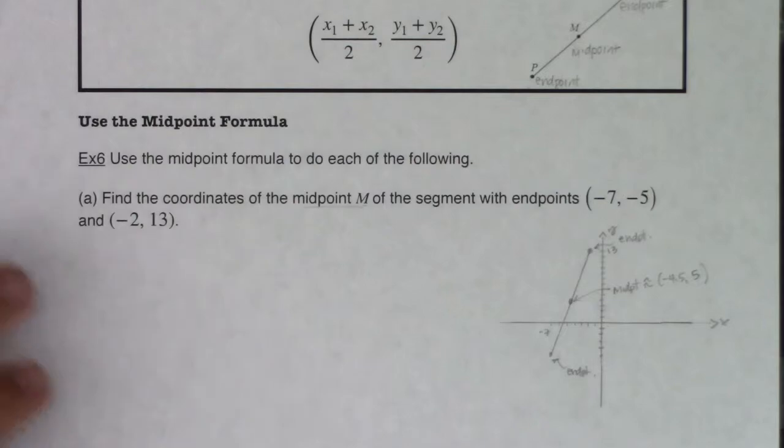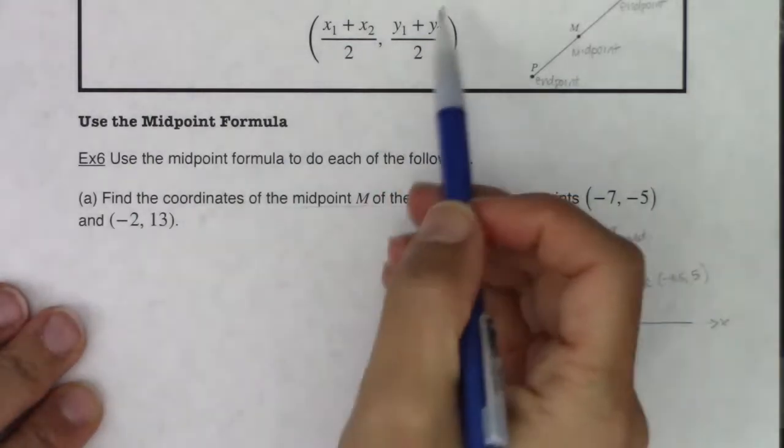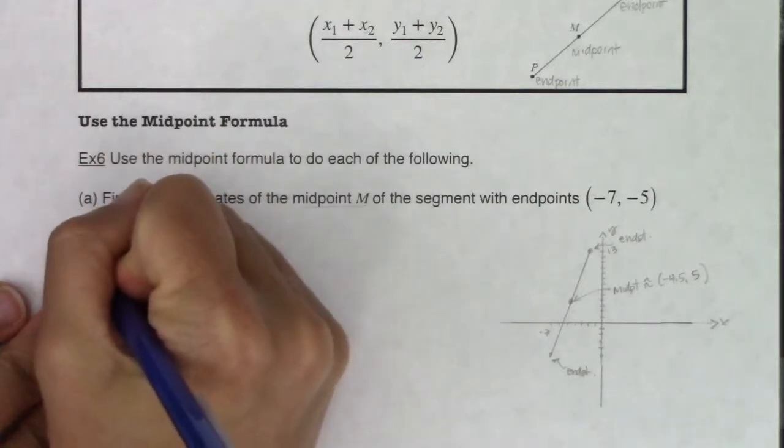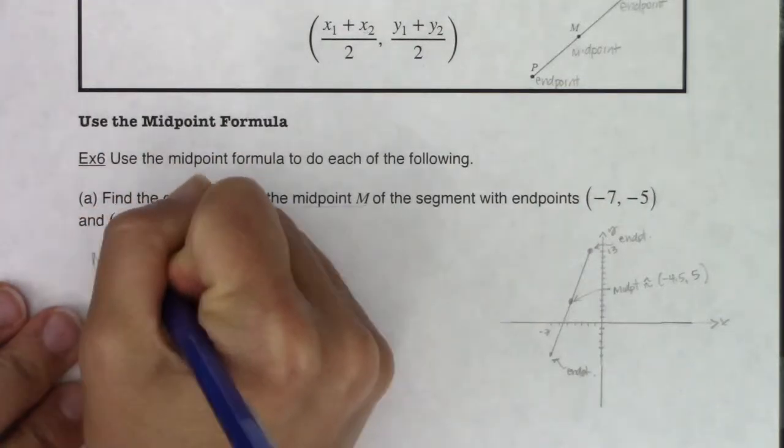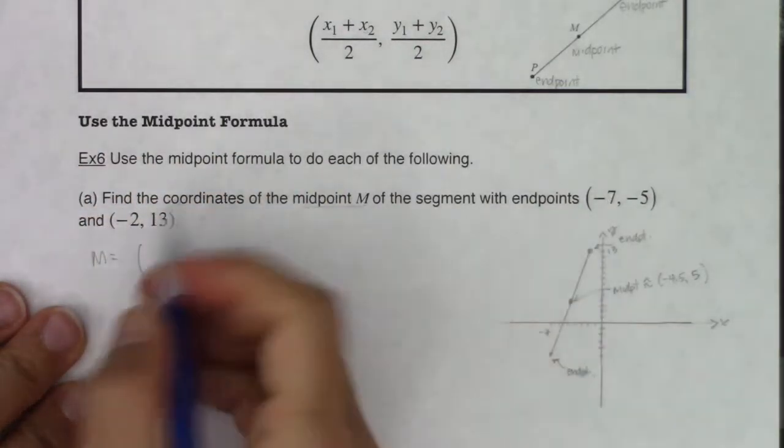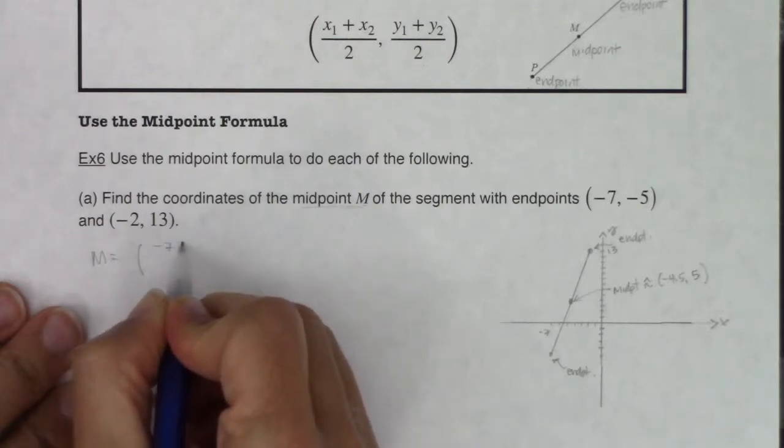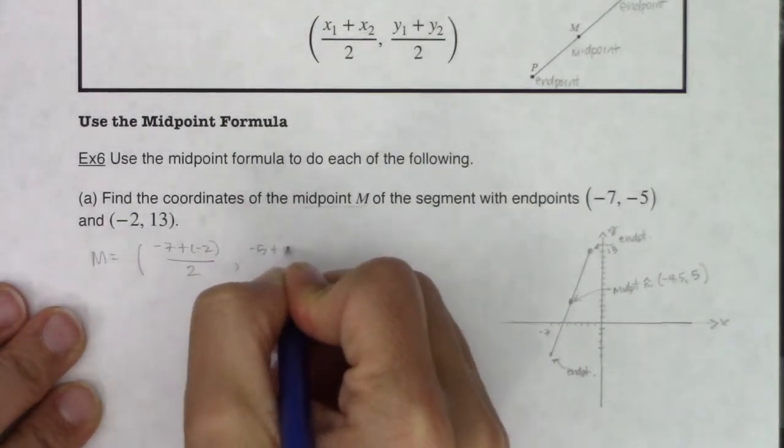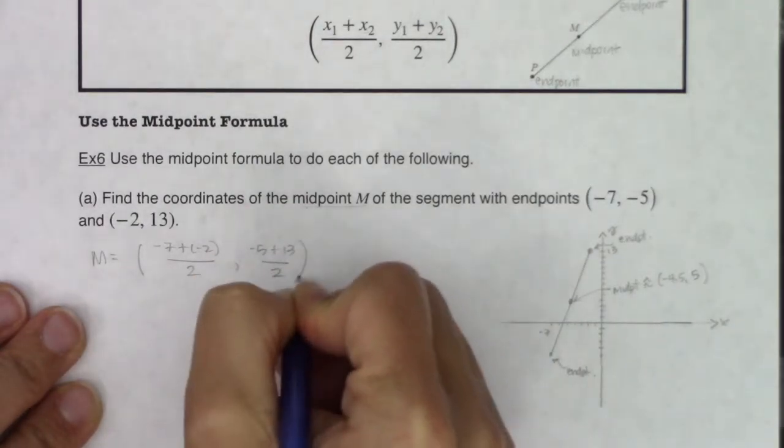So it says average the x-coordinate, average the y-coordinate. So I'm going to say my midpoint here would be equal to the average of the x-coordinate, so negative 7 plus negative 2 divided by 2. And then we need to average the y-coordinate, so negative 5 plus 13 divided by 2.